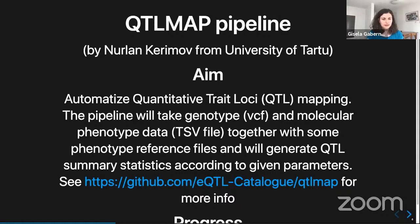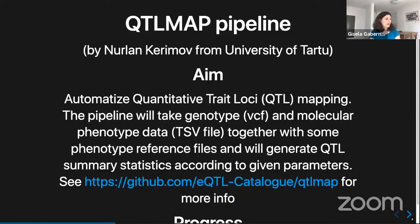There doesn't seem to be anybody right now, but just a brief description. The QTL map pipeline was proposed by Nolan Kerimov from the University of Tartu. It's supposed to automatize quantitative trait locus mapping — the connection between genotype and molecular phenotypic data. So that's quite an exciting pipeline to have. We hope to see more developments this week on this one.